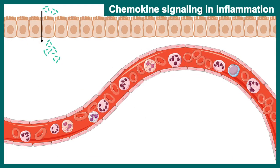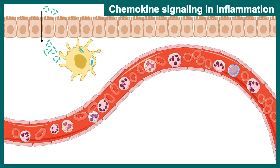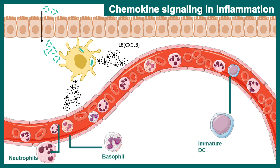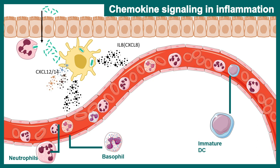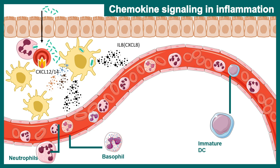Let us take another example. Let's say this is a site of infection with a lot of bacterial invasion. First, the dendritic cell reaches there, engulfs pathogens, and secretes interleukin-8, also known as CXCL8, which was the first discovered chemokine. This particular chemokine is sensed by neutrophils, basophils, and immature dendritic cells in the circulation. This signaling helps in extravasation of these cells into the tissue space, recruiting them to the infection site. Further, the dendritic cell secretes CXCL12 and CXCL14, which help mobilize more dendritic cells into the site of infection. All of these events lead to inflammation in that region.